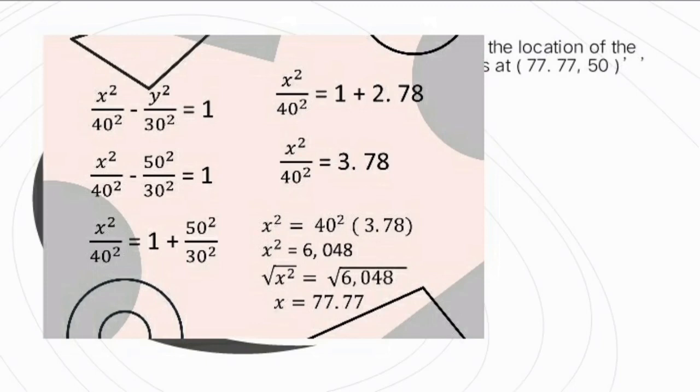Our equation becomes X squared over 40 squared equals 1 plus 50 squared over 30 squared. Using our calculator, 50 squared over 30 squared equals 2.78. So X squared over 40 squared equals 1 plus 2.78, which equals 3.78. Now we need to remove the divisor of X squared, which is 40 squared. To remove the divisor, we multiply both sides by the divisor. When we multiply both sides by 40 squared, our equation becomes X squared equals 40 squared times 3.78.